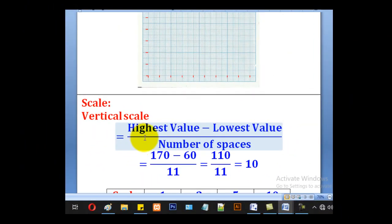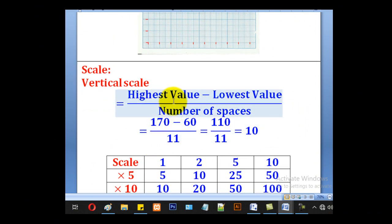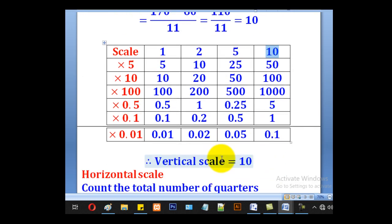For the vertical scale, we shall use the formula, highest value minus lowest value over the number of spaces. So highest value is 170, lowest is 60, divided by the number of spaces which is 11, we shall come up with 10. Our vertical scale will be 10.